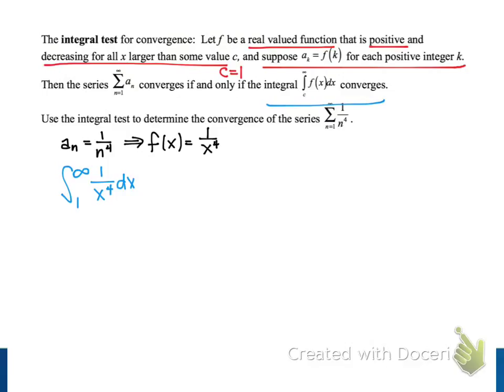Our first step in evaluating this integral is to replace the upper limit with a variable that represents a finite value b. And then we're going to evaluate that limit as b goes to infinity. And in this step, we're also going to rewrite the integrand as x to the negative fourth dx to make it easier to work with.